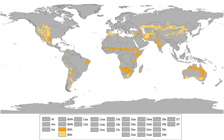Hot semiarid climates are also found in sections of South America such as the Sertão, the Grand Chaco, and on the poleward side of the arid deserts, where they typically feature a Mediterranean precipitation pattern, with generally rainless summers and wetter winters.